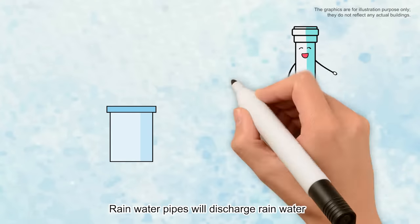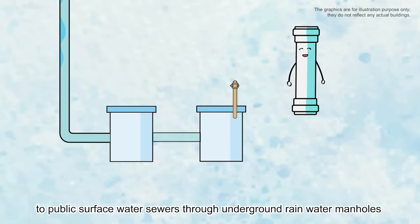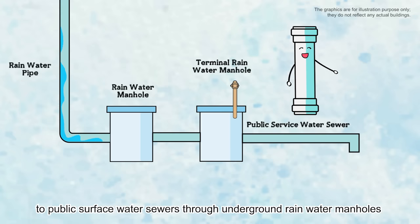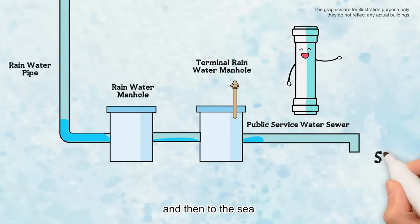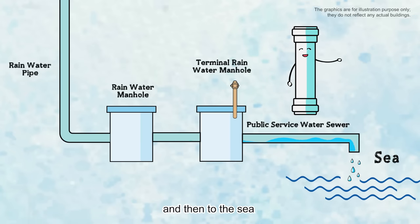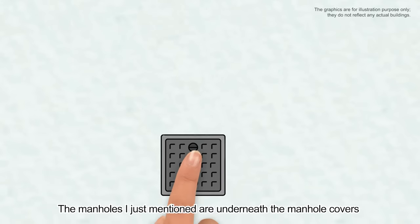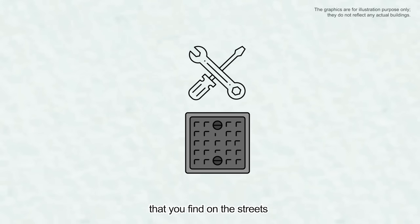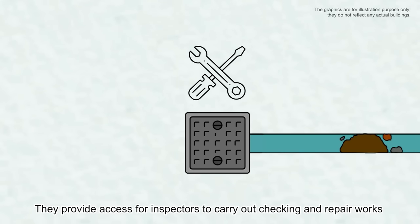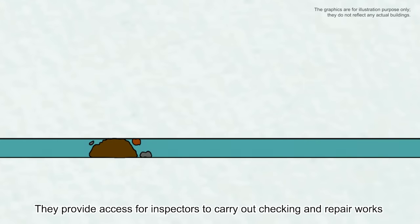Rainwater pipes will discharge rainwater to public surface water sewers through underground rainwater manholes, and then to the sea. The manholes I just mentioned are underneath the manhole covers that you find on the streets. They provide access for inspectors to carry out checking and repair works.